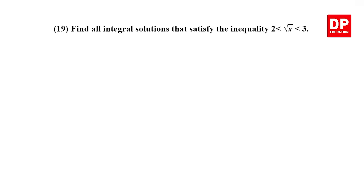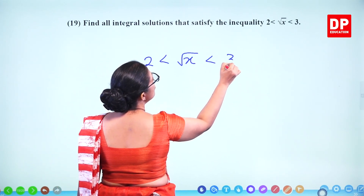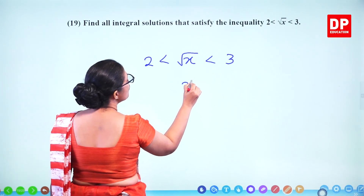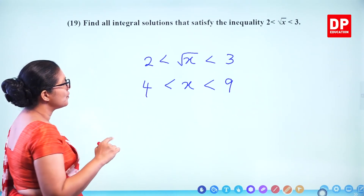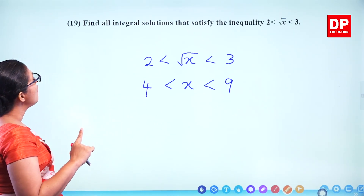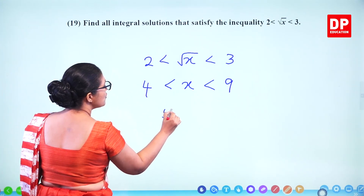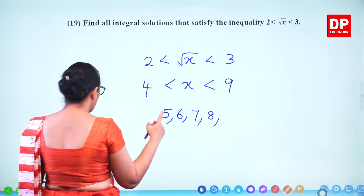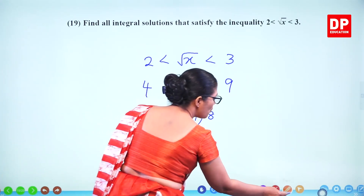Question number 19. Find all integral solutions that satisfy the inequality 2 < √x < 3. Square everything: 4 < x < 9. The integral solutions between 4 and 9 (not including 4 or 9) are 5, 6, 7, and 8. Two marks.